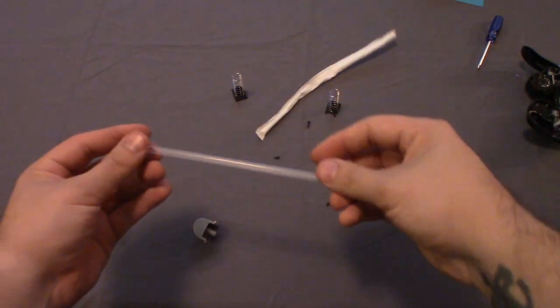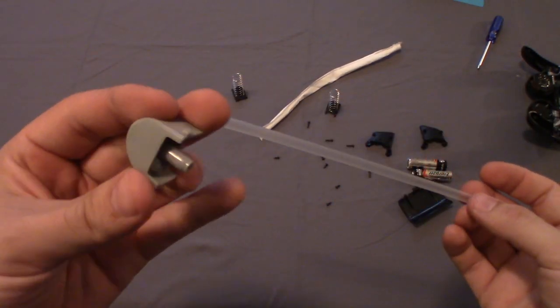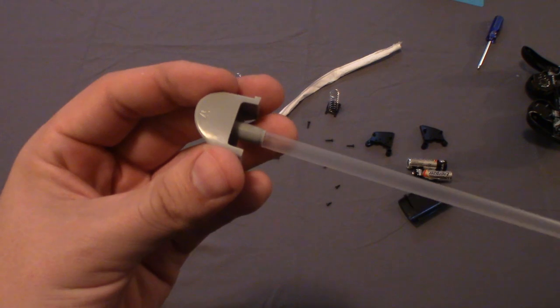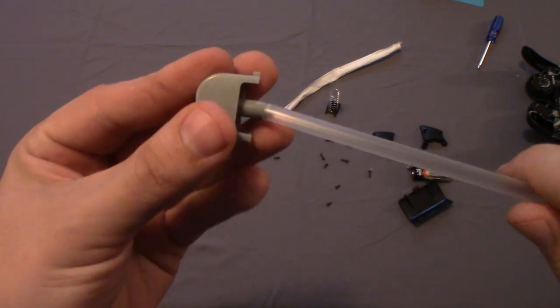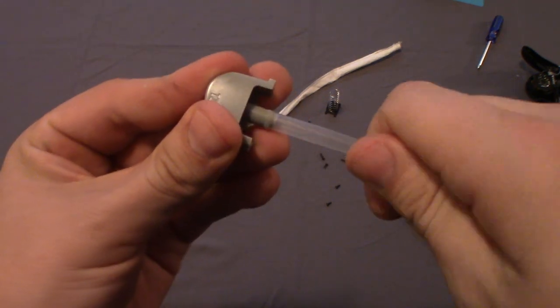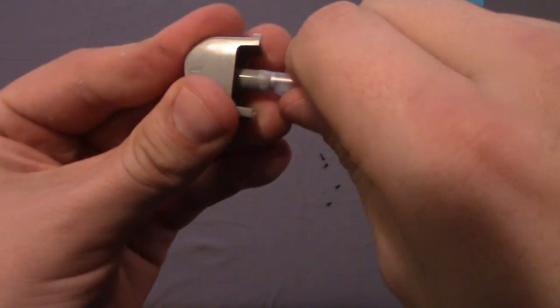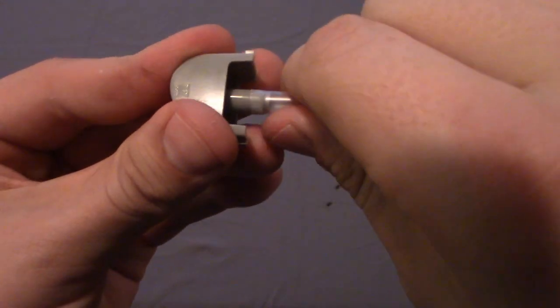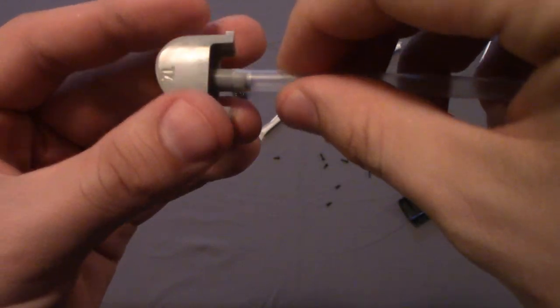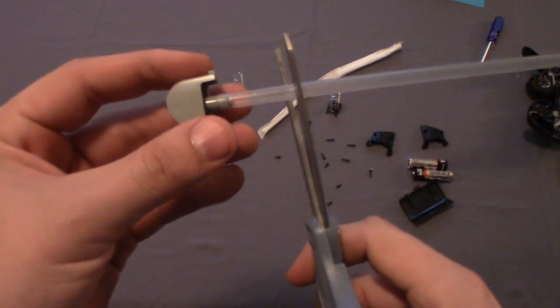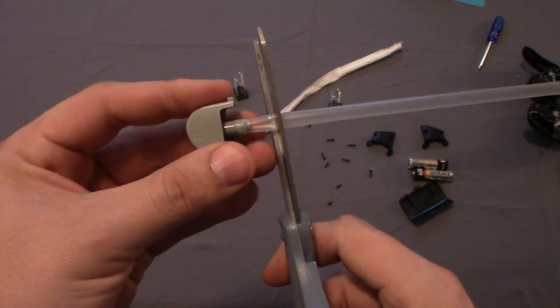This is where the drinking straw comes in. Feed it over the trigger post as tight as you can get it so it will stay in place as we work with it. The straw will act as a form to hold the hot glue until it sets, and it will be the solid glue doing all the heavy lifting. Trim the excess, leaving only about a quarter to a half an inch. It won't take much to get the job done.